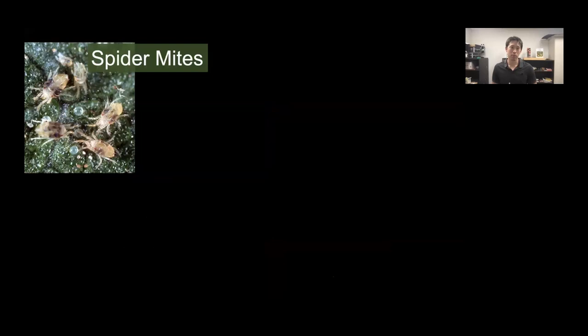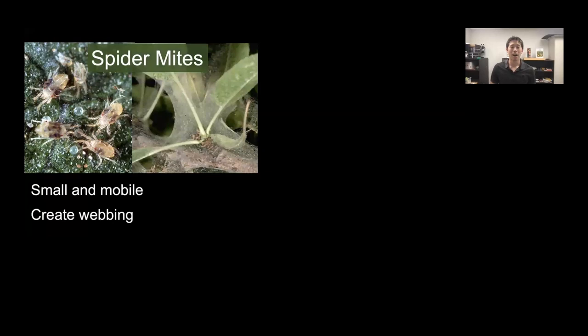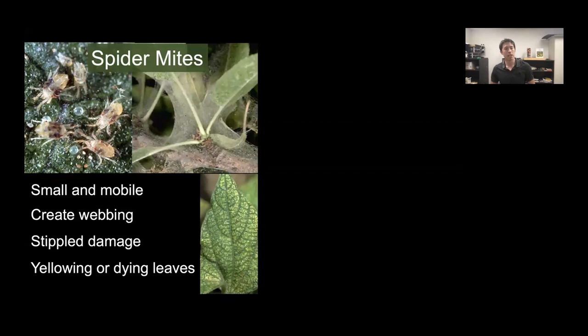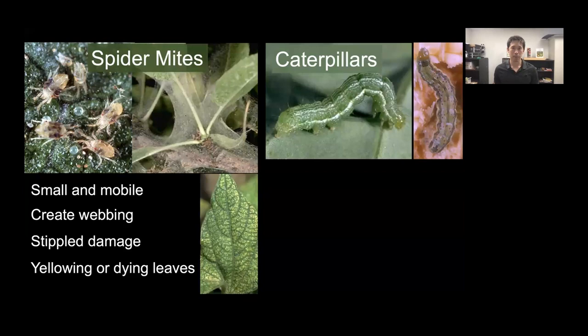Spider mites are small, mobile, and build up quickly—especially on drought-stressed plants. They create dense webbing across plants, distinct from spider webbing, with large numbers of mites crawling on it. They leave stippled damage: instead of uniform green, leaves show lighter yellowed sections. Yellowing or dying leaves along with that distinctive webbing are key signs that spider mites are present.